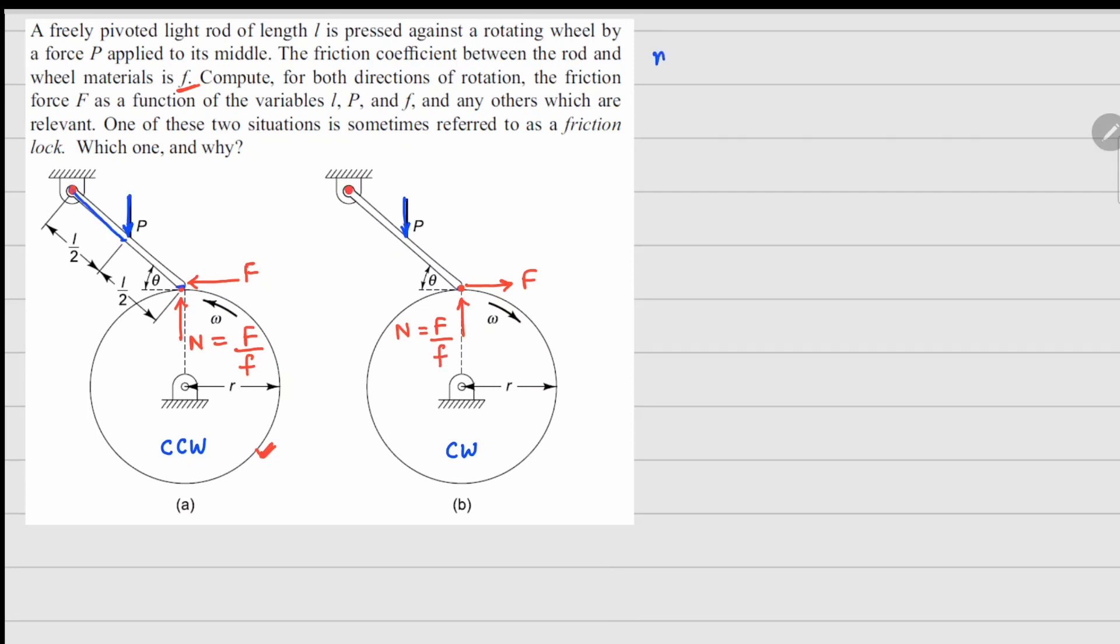So, now let us do the moment balance for the bar, and we will do this moment balance about the pivot point. This force P about this point will give you a clockwise moment, and the moment arm is going to be this horizontal distance. So, P times the horizontal distance is going to be L by 2 cos theta. Similarly, this force will give you an anti-clockwise moment. So, it's going to be minus N, and the distance is going to be L cos theta, and this force F right here above this point will give you a clockwise moment, and the moment arm is going to be this vertical height. So, it's going to be plus F L sin theta equals to 0.